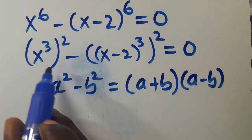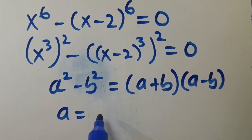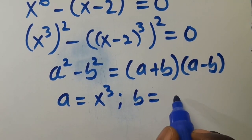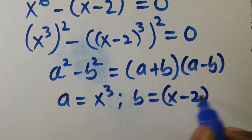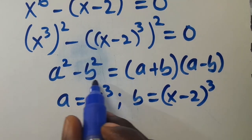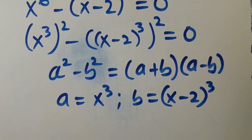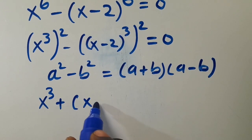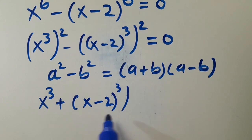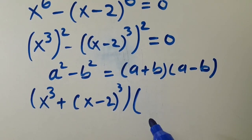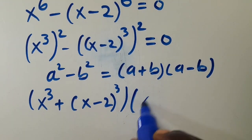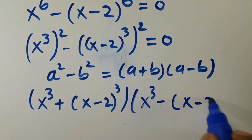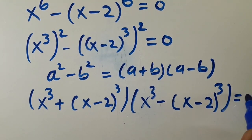Applying this theorem to this expression, we let a equal x to the power of 3 and b equal x minus 2 to the power of 3. So we get x cubed plus x minus 2 to the power of 3, in a bracket, multiplied by x cubed minus x minus 2 to the power of 3, in a bracket, equals 0.